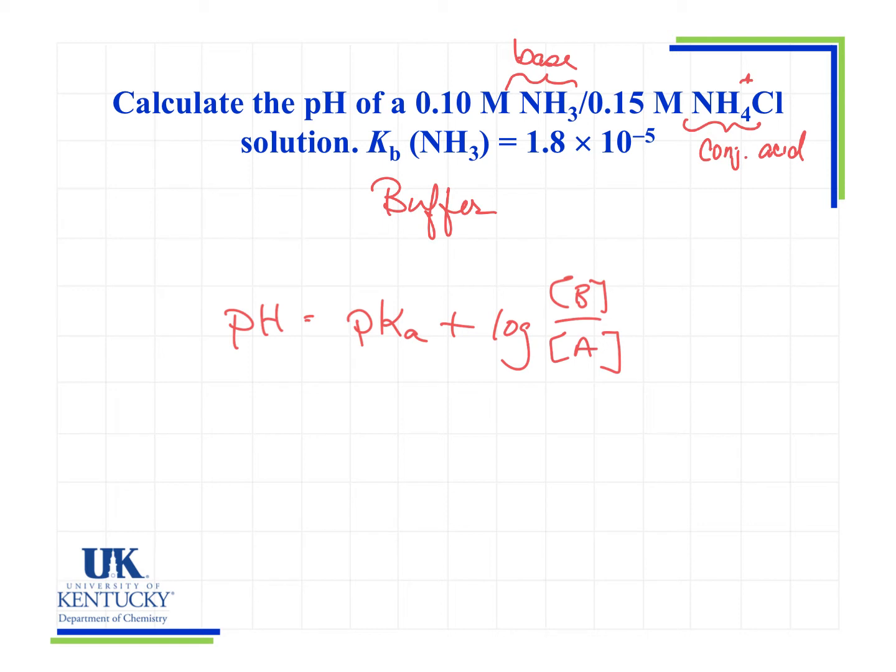So if we're wanting to get the pH, we need the pKa. I see here that they gave me the Kb. So how do we get the pKa from the Kb? They gave me the Kb, and I'll need the Ka so I can get the pKa.